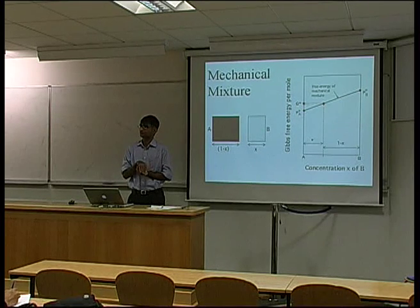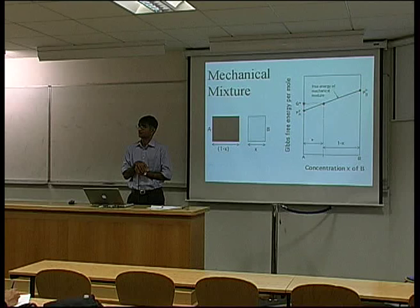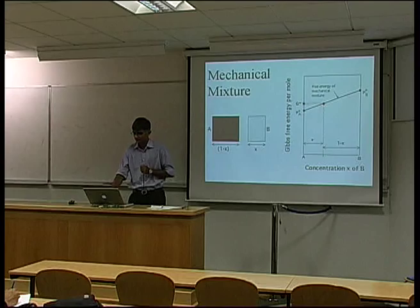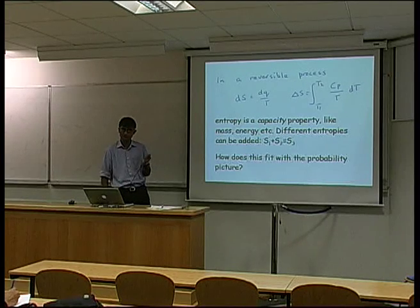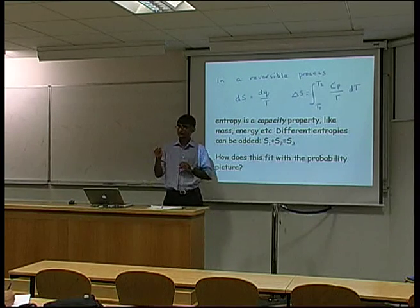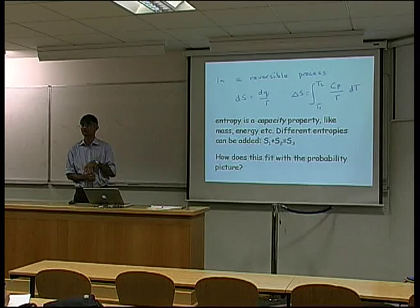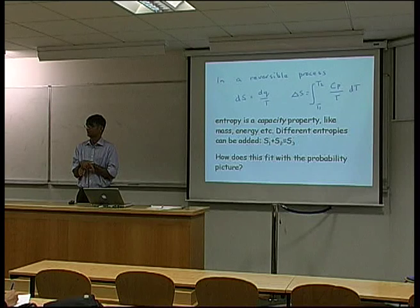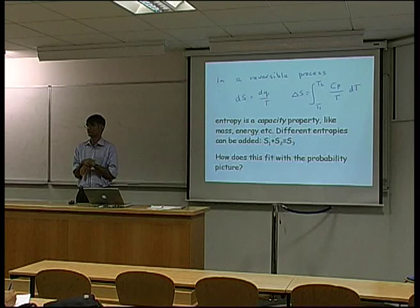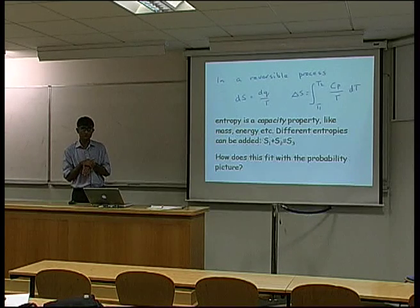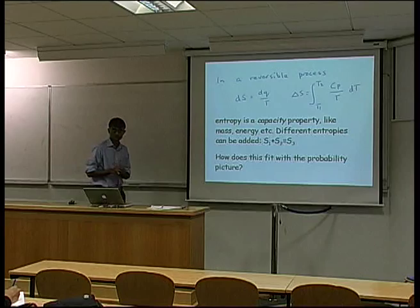When does this become a solution? When all the atoms are intimately mixed. Before we can treat that, we need to show what happens when we mix atoms even if there is no change in enthalpy. In other words, when I break AA bonds and BB bonds to form AB bonds, there is no change in enthalpy. That is what we call an ideal solution. And to do that, we need to think a little bit more about entropy.